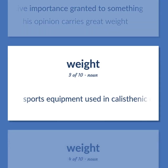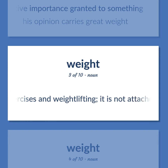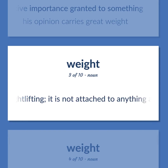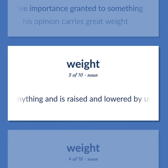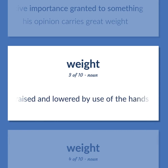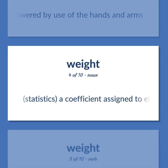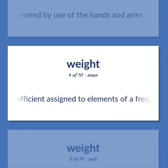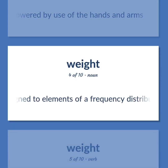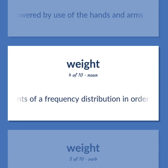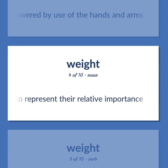Weight: Sports equipment used in calisthenic exercises and weightlifting. It is not attached to anything and is raised and lowered by use of the hands and arms. Statistics: A coefficient assigned to elements of a frequency distribution in order to represent their relative importance.